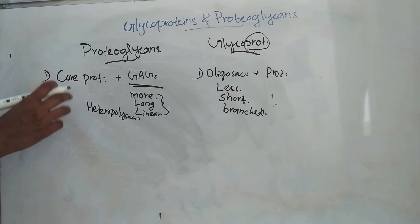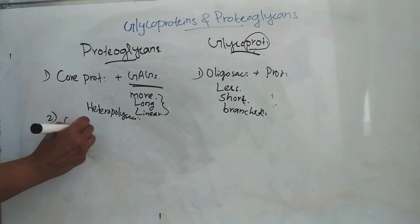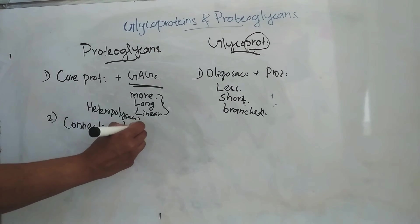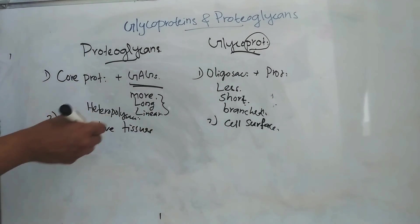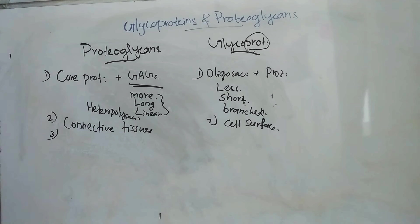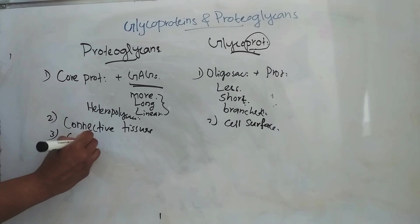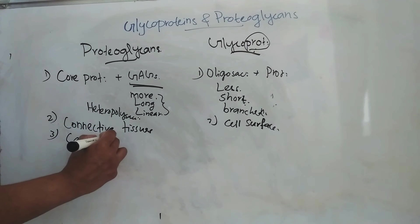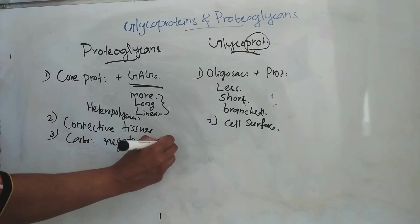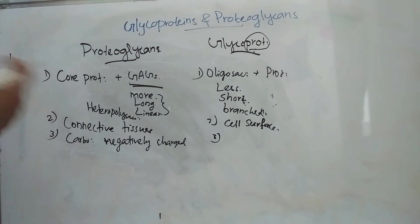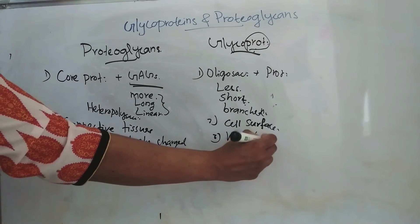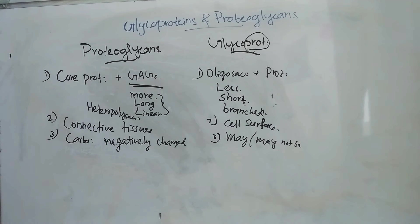The second difference: proteoglycans are mainly located in connective tissues, whereas glycoproteins are located on the cell surface. The third difference: in proteoglycans, the carbohydrate chains are negatively charged. In glycoproteins, the carbohydrate chains may or may not be negatively charged. These are the main differences between glycoproteins and proteoglycans.